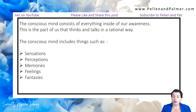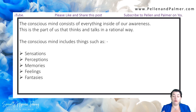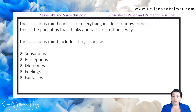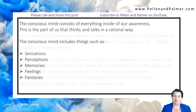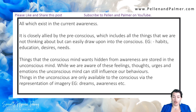These are what we're told to do, what we can and can't do — laws and sensations. The conscious mind includes such things as sensations that we get, perceptions that we have — whether they're right or wrong, it's still a perception — memories, feelings, and fantasies. All of these exist within our current awareness.